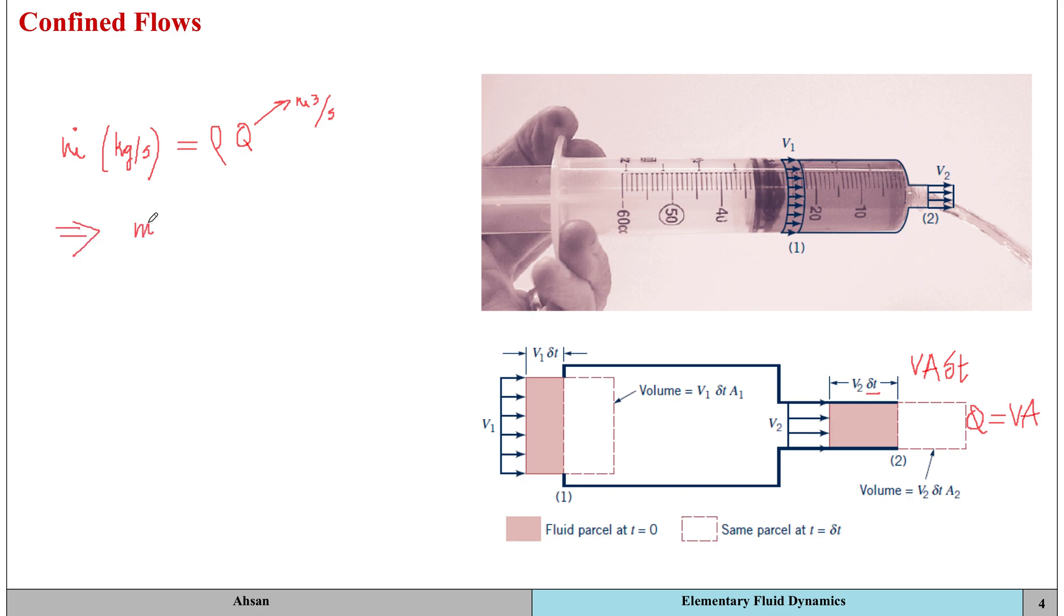That means from this equation, your mass flow rate is going to be equal to rho into velocity into area.